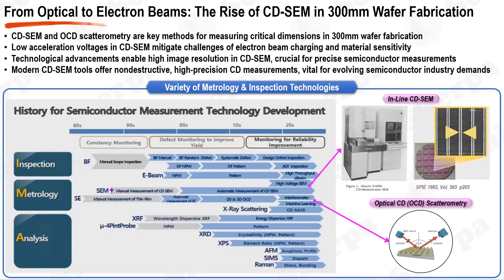In 300 mm wafer fabrication, two primary methods stand out for measuring CD: CD-SEM and optical critical dimension, OCD, scatterometry. OCD scatterometry uses white rays to collect structural data including top, middle, and bottom CD, depth, and sidewall slope, but is limited in diverse shape analyzes. In contrast, CD-SEM, which primarily focuses on top-down imaging, excels in capturing shape-specific metrics such as edge roughness, edge placement error, and OPC modeling, which are vital in photolithography. For this reason, the photolithography process continues to depend on inline CD-SEM technology.